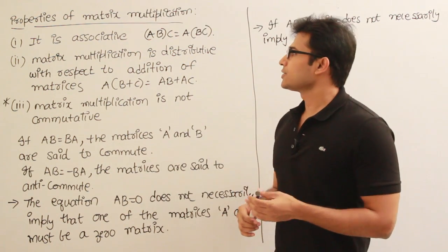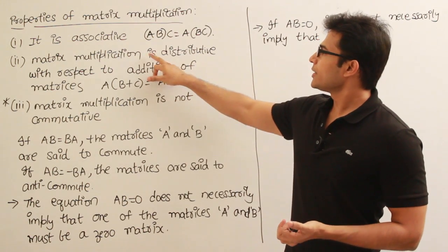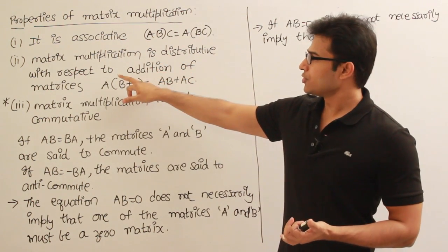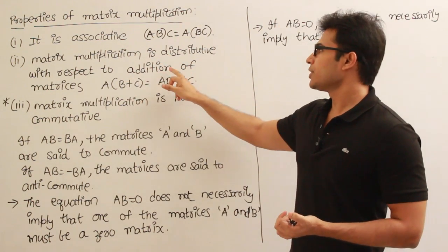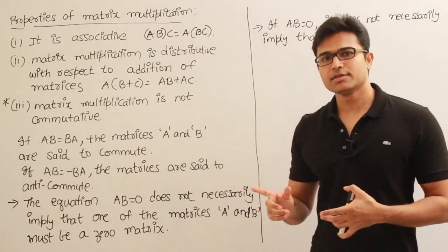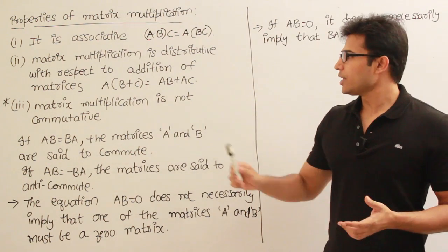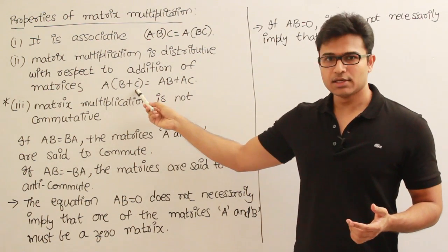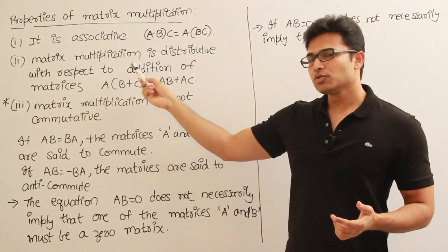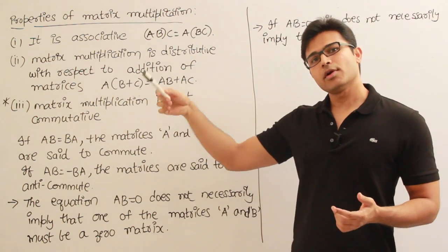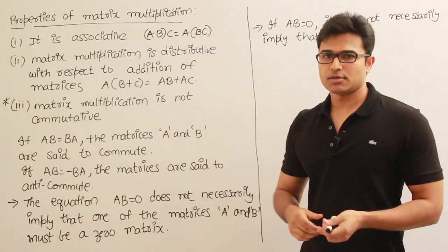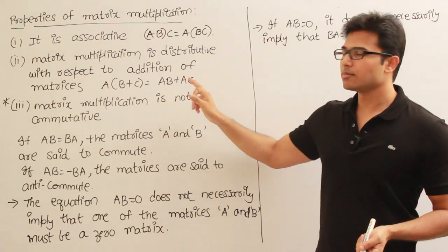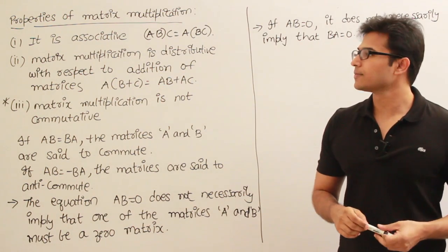Next, matrix multiplication is distributive with respect to addition of matrices. It means that if you have addition of matrices B plus C, then multiplication is distributive over the addition. So A into (B plus C) is going to be AB plus AC. That is the meaning of it.